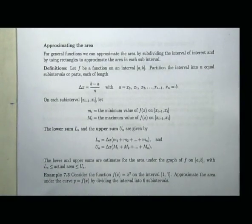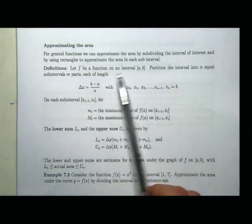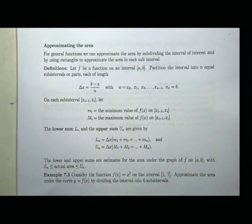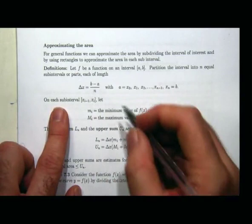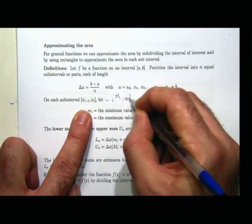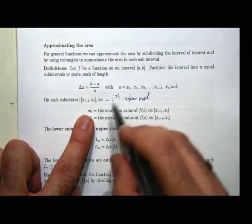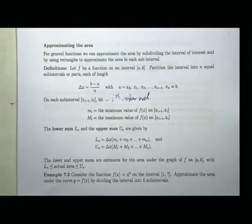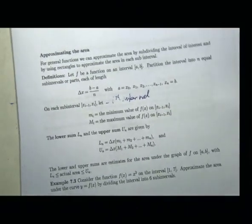Approximating area: a function on the interval is partitioned into n equal subintervals, each of a certain length. This is the i-th interval. When we're doing upper and lower sums, we're finding the minimum on that interval and the maximum on that interval.